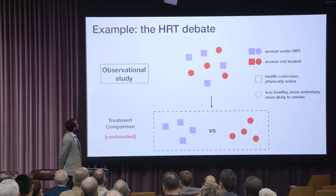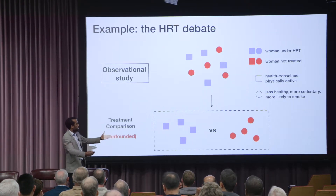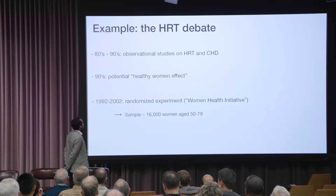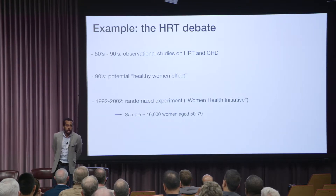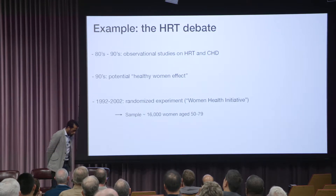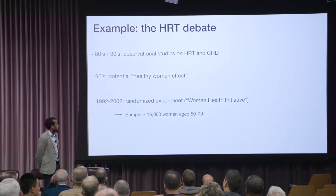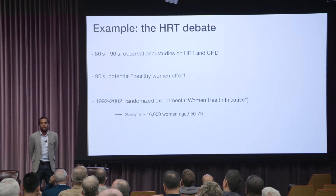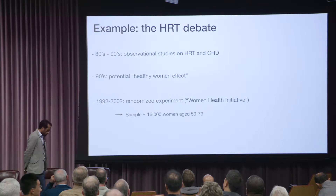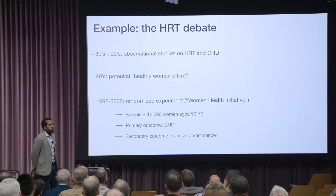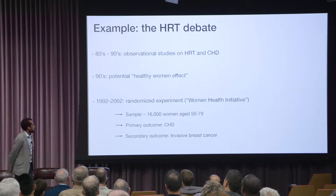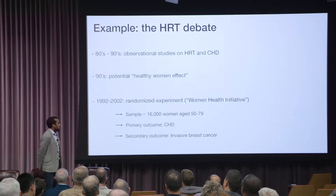So how do we actually fix that? How do we get a serious answer to the question we're asking? We run a randomized experiment. This is exactly what was done when the NIH funded the Women's Health Initiative — a really large randomized experiment. They took a sample of 16,000 women, aged 50 to roughly 80 years old, and looked at two things: the primary outcome was coronary heart disease, and the second was invasive breast cancer.